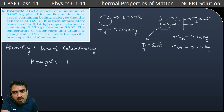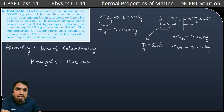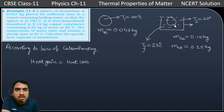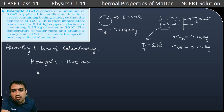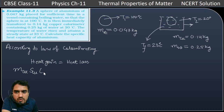So here we need to understand which system gains heat and which loses heat. The aluminum sphere loses heat, and the water and calorimeter gain heat. We use the formula M × S × ΔT. For copper, it is mass of copper × specific heat of copper × delta T.